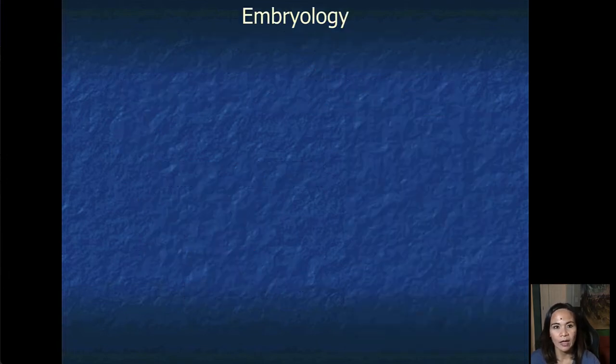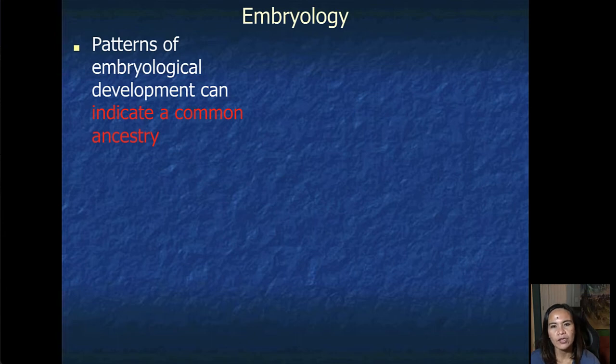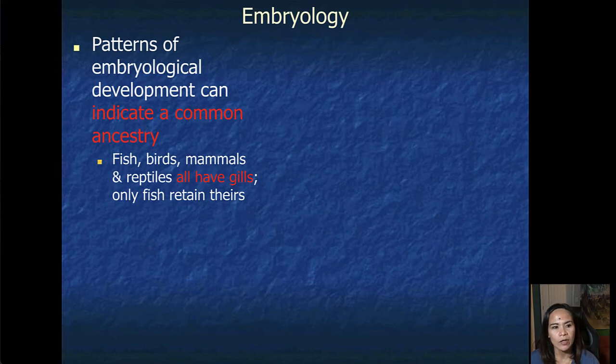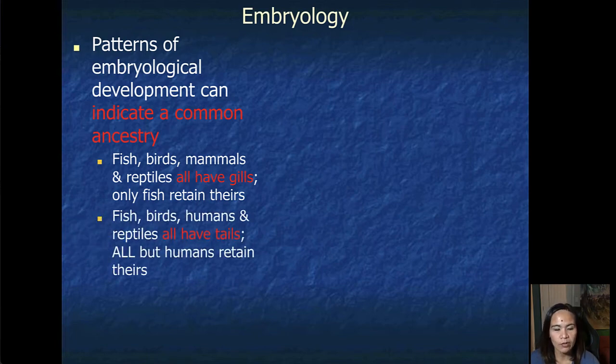The next evidence is embryology. Patterns of embryological development can indicate a common ancestry, such as the birds, fish, mammals, and reptiles. They all have gills. Only fish retain theirs. The fish, birds, humans, and reptiles all have tails. All but humans retain theirs.